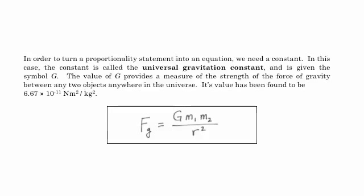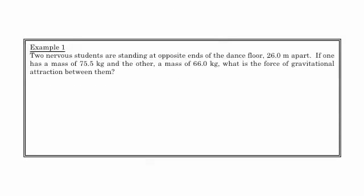So let's take a look at an example. Two nervous students are standing at opposite ends of the dance floor, 26 meters apart. If one of the students has a mass of 75.5 kilograms and the other has a mass of 66 kilograms, what's the force of gravitational attraction between them? Well, here we have the things that we've been given in the problem. And we want to determine what's the gravity that's acting between them?